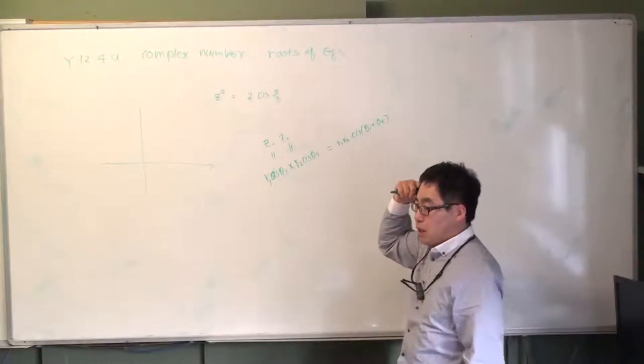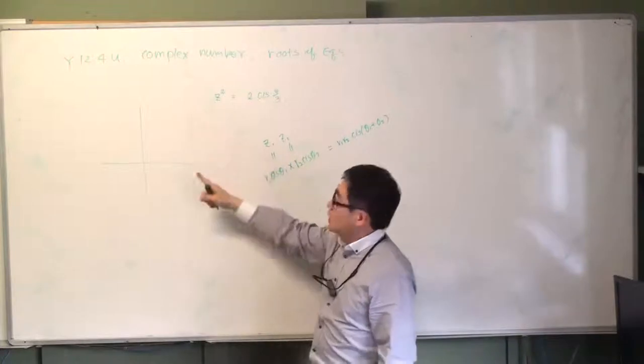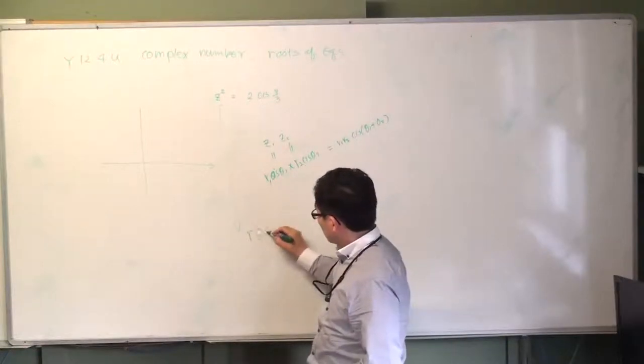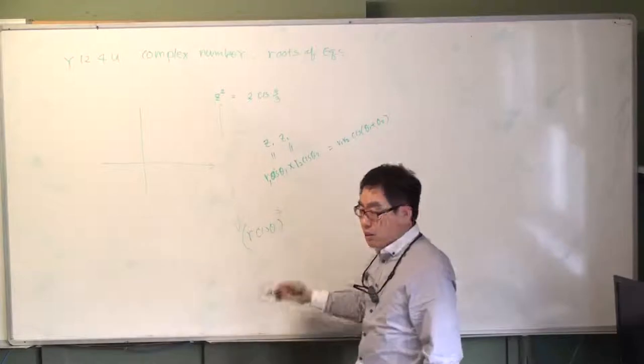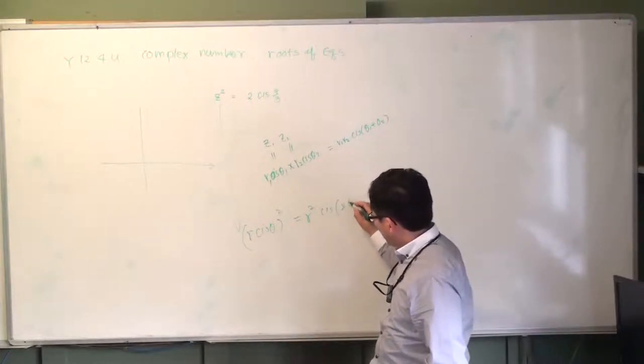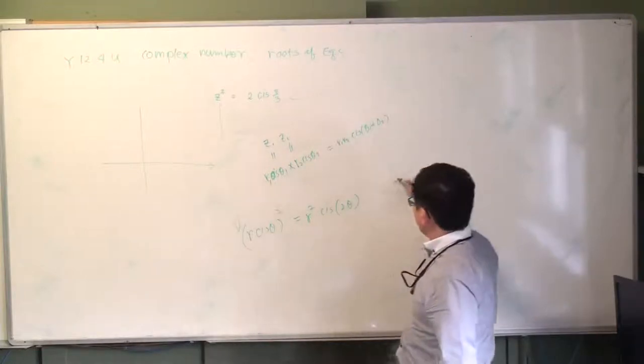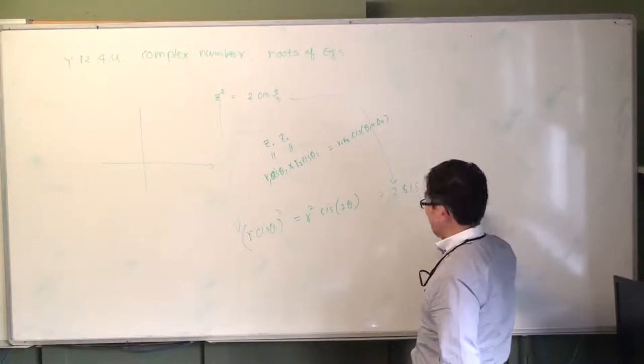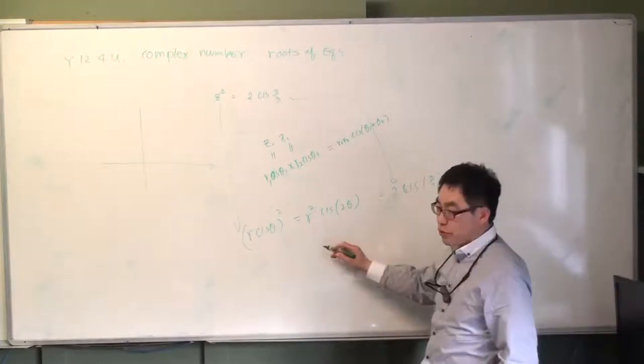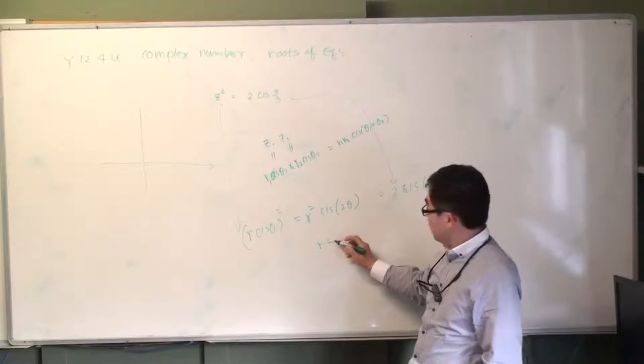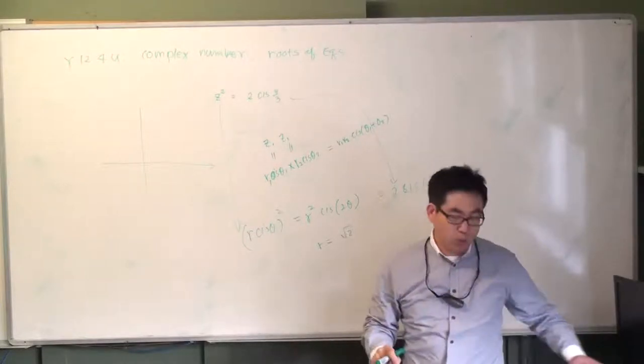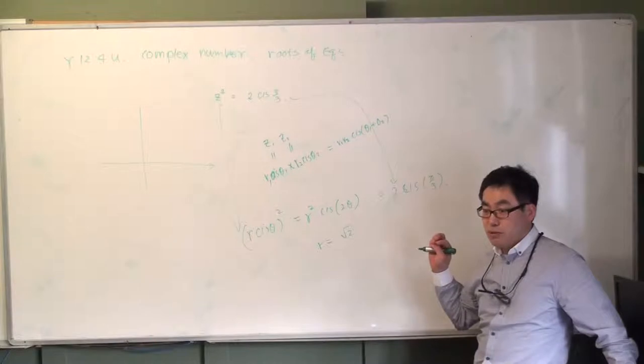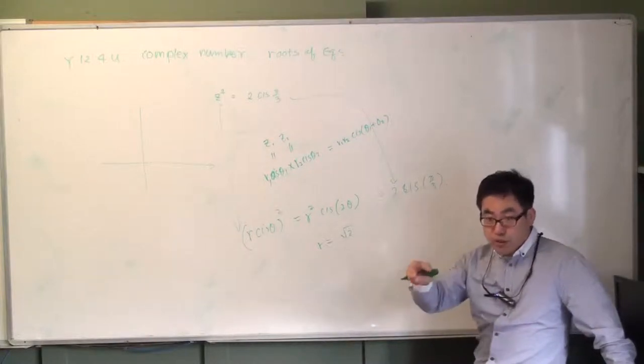So if you think about that, we have a certain complex number. If it's squared, say R cis θ squared, then there will be R squared cis 2θ. Then that should become 2 cis π/3. So what is the solution? R will be root 2. Would you say plus minus root 2 or just root 2? Modulus we are talking about, always positive. It's distance.